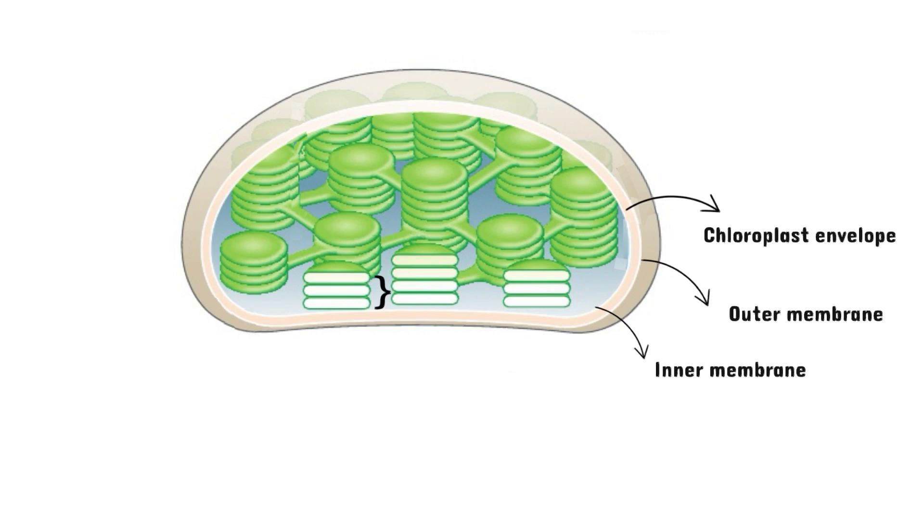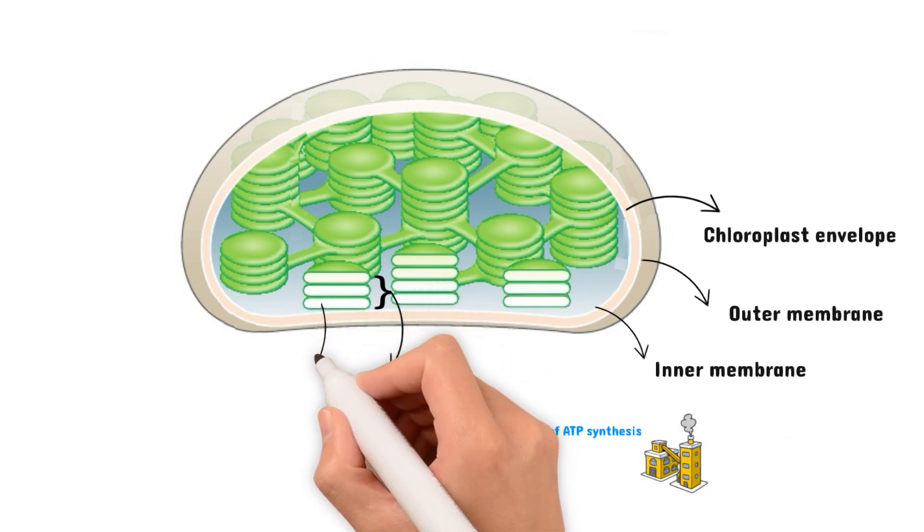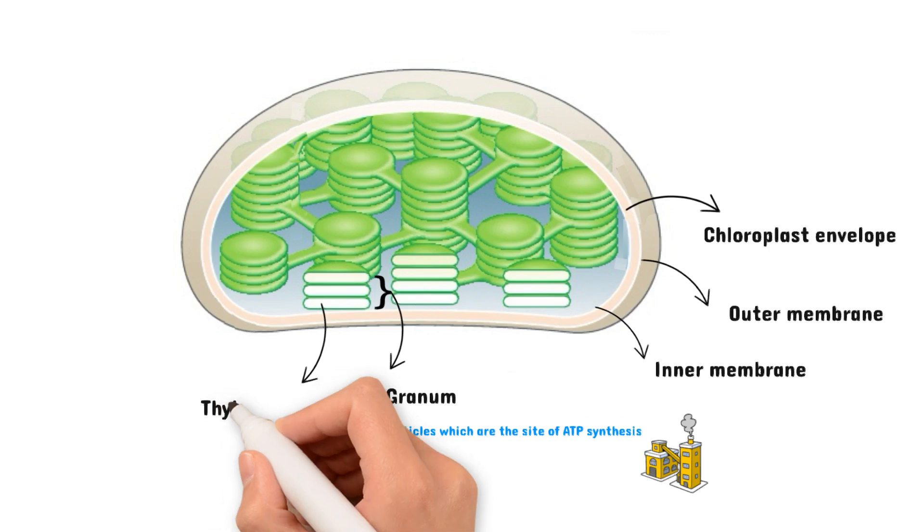These are membranes that are arranged in layers. Each stack is a granum, or grana for plural. The grana membranes are covered in particles, which is where the production of ATP is thought to occur. Each individual membrane disc is known as a thylakoid. This is where the green pigment chlorophyll is found.